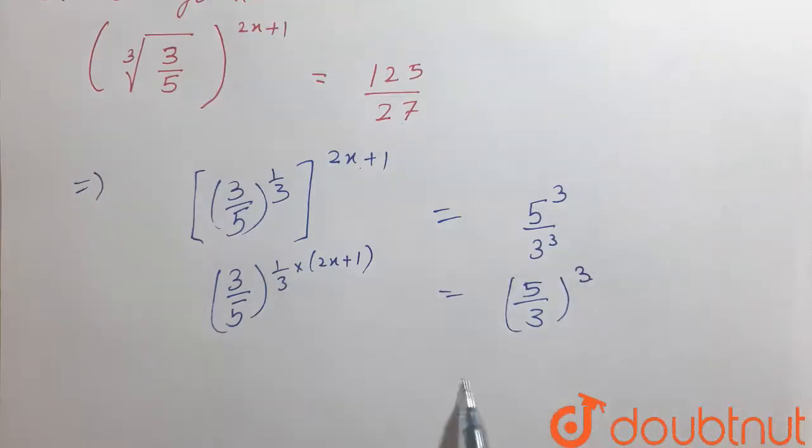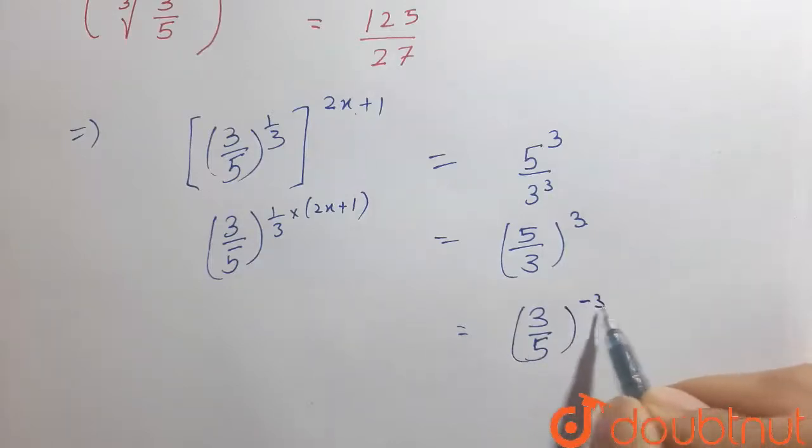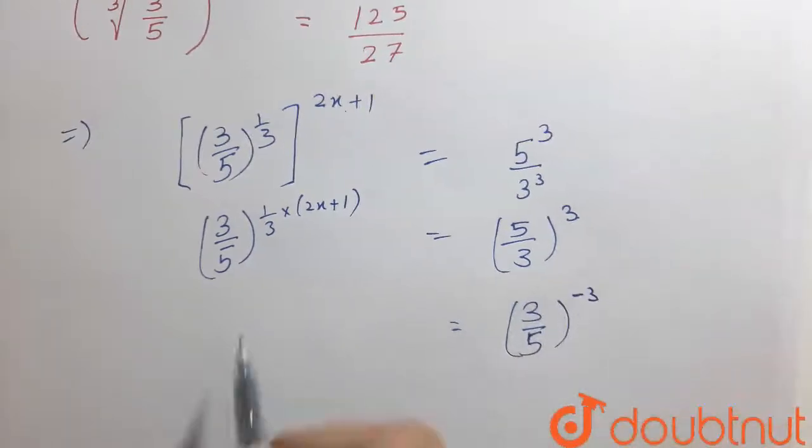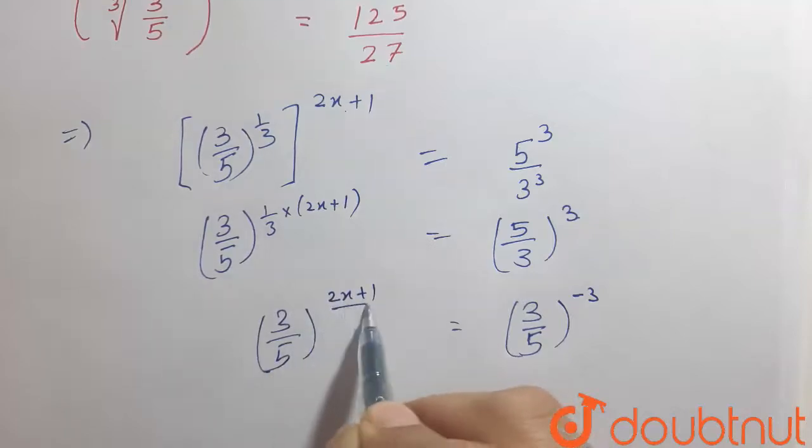Now reciprocating the right hand side, this becomes (3/5) raised to the power minus 3, because we reciprocate this. And this can be written as (3/5) raised to the power (2x plus 1) over 3.